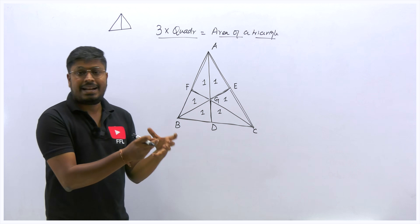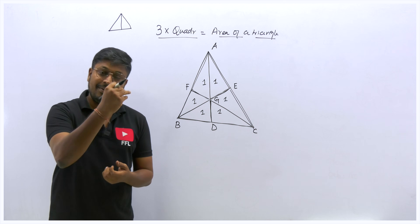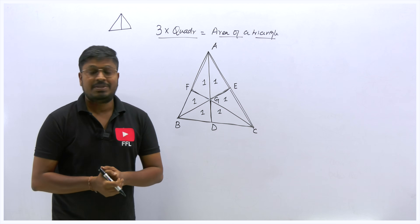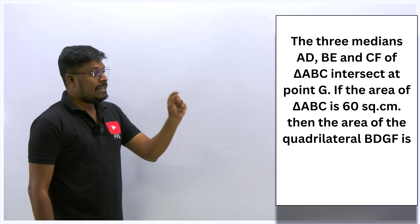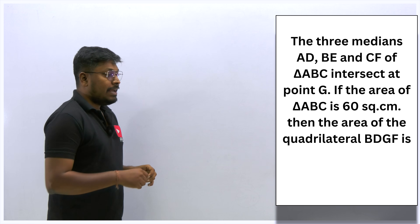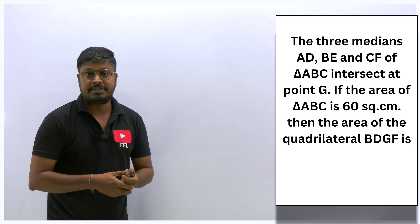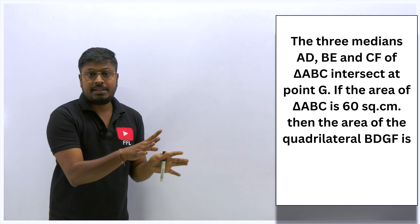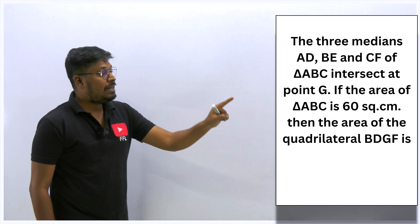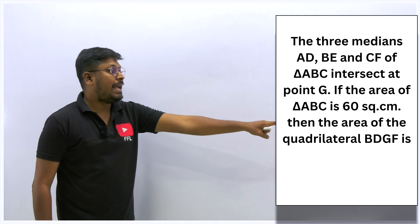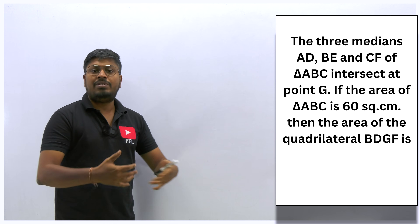Now let me move on to the questions. I will be solving two questions here to understand this concept. Here is the first question: The three medians AD, BE, and CF of triangle ABC intersect at point G. If the area of triangle ABC is 60 square centimeters, then find the area of quadrilateral BDGF. They didn't give any diagram, so we have to draw one.